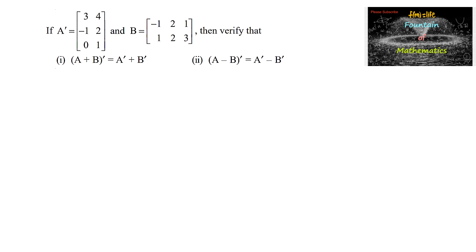If A transpose is equal to [3, 4, -1; 2, 0, 1] and B is equal to [-1, 2, 1; 1, 2, 3], then verify that (A+B) transpose equals A transpose plus B transpose, and (A-B) transpose equals A transpose minus B transpose. These are properties of transpose of a matrix, so let us prove them by taking these examples.